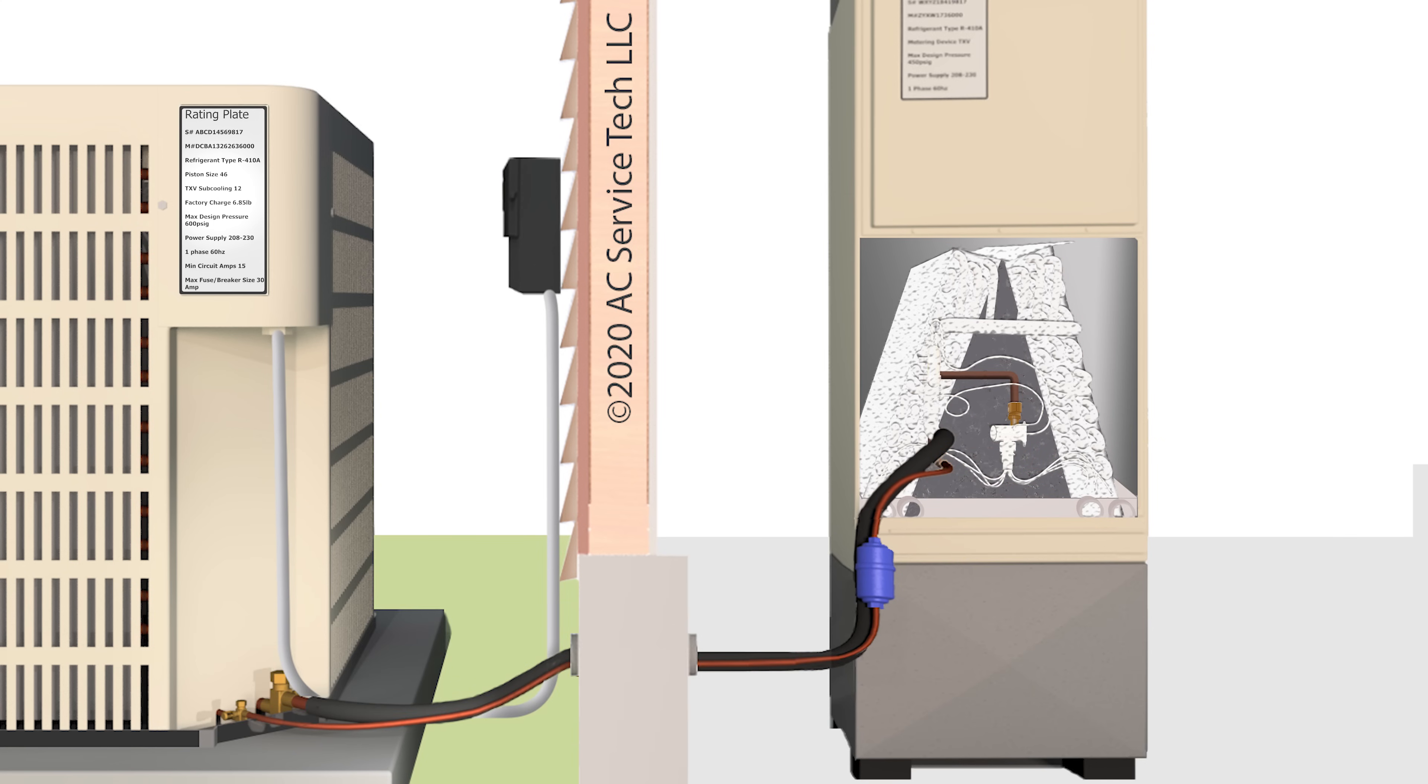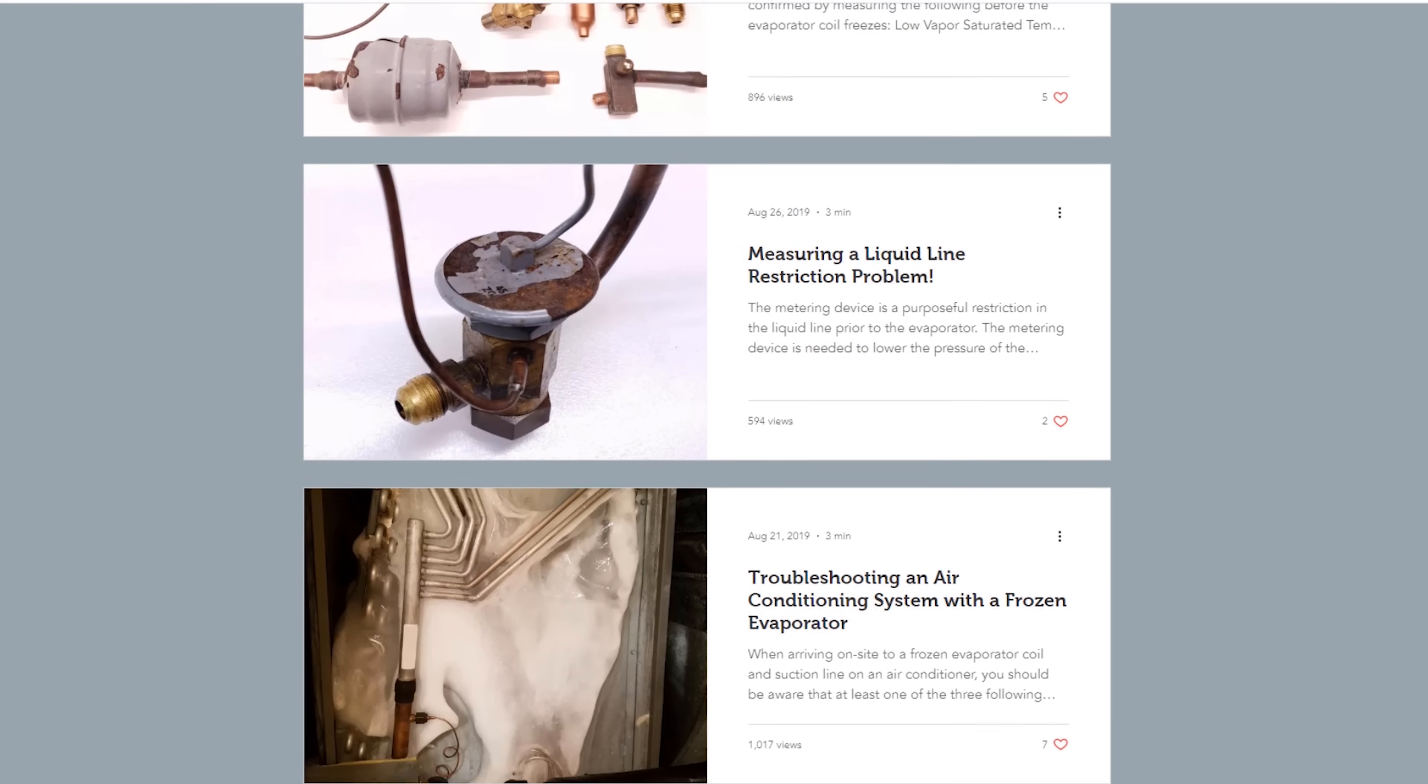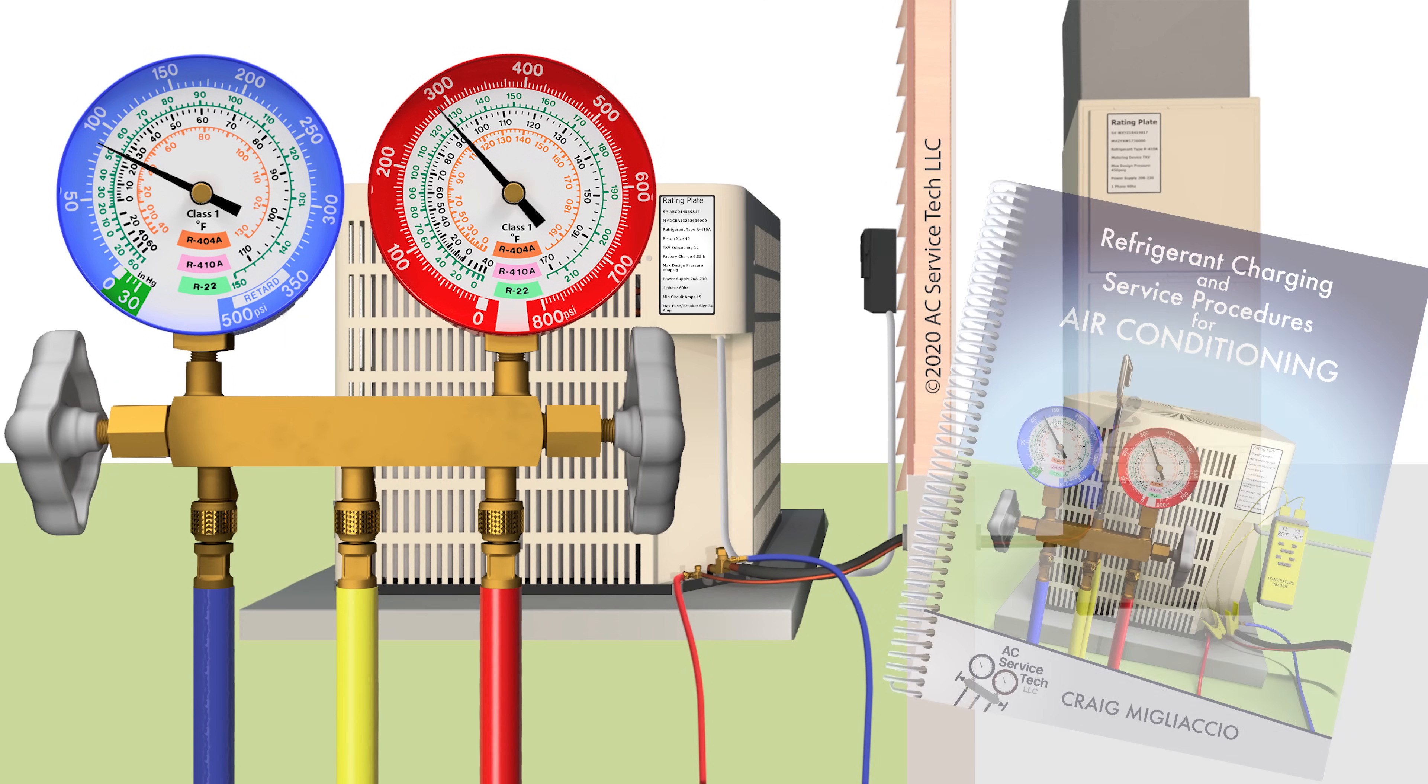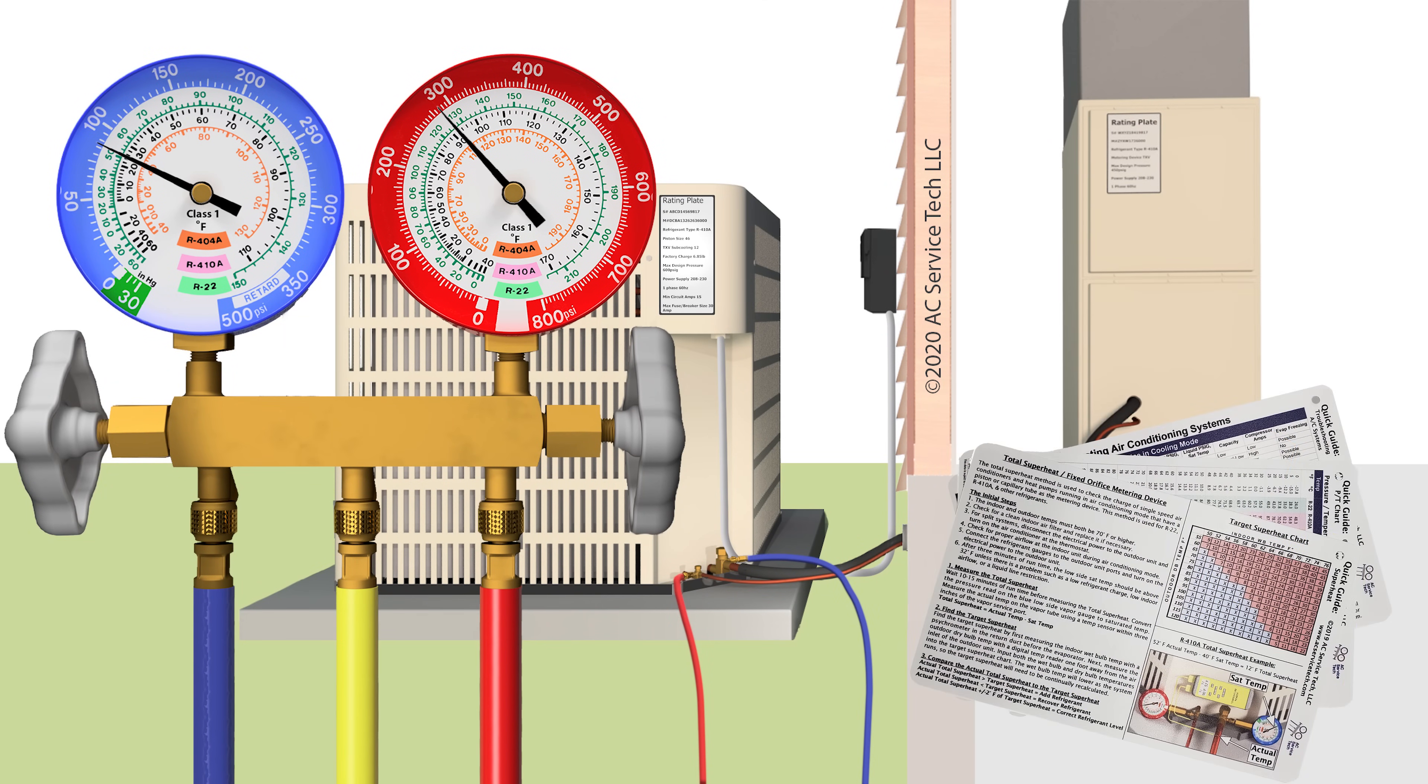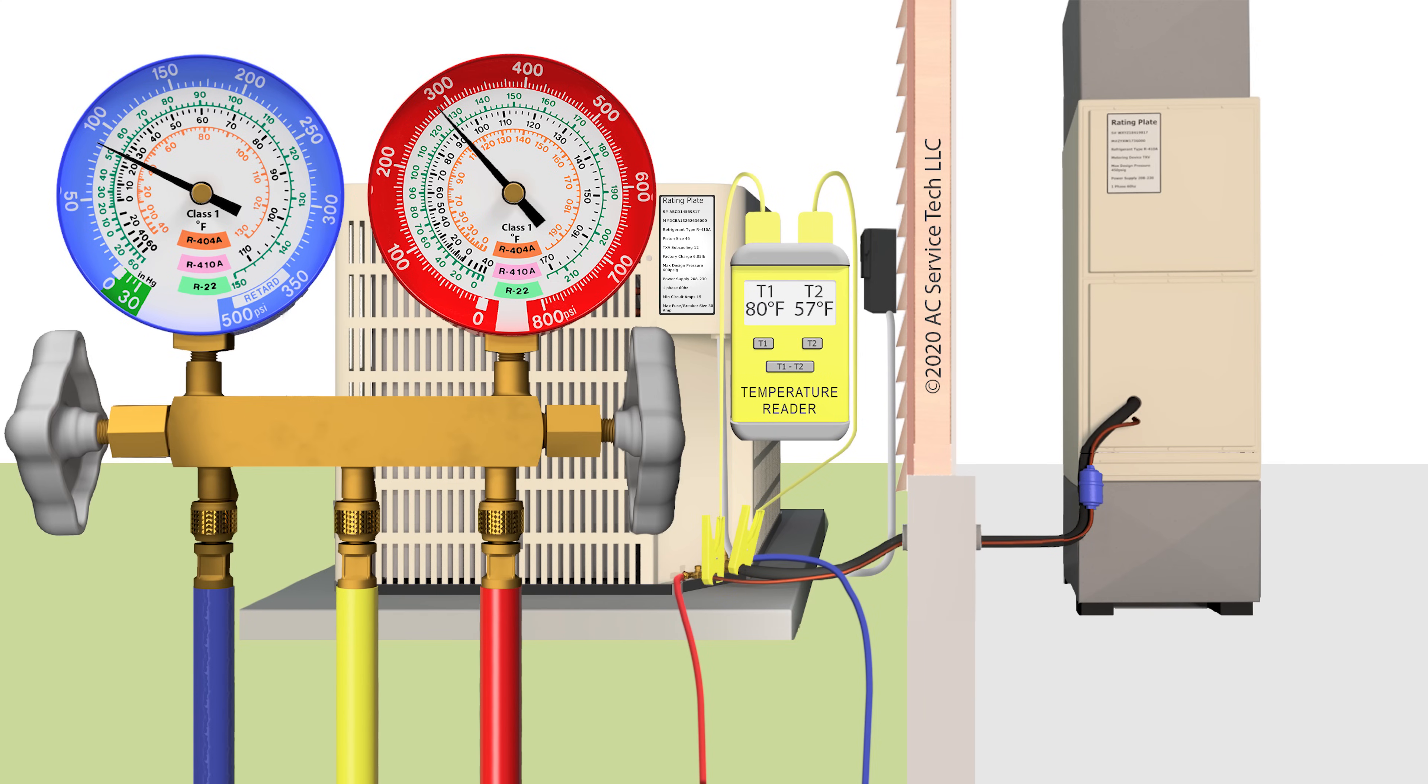So you don't necessarily have to defrost that evaporator coil before diagnosing the system to determine if it is low on refrigerant. Now, if you got a subcooling of 8 degrees or 14 degrees or something like that, it could be a low airflow problem or a liquid line restriction problem, and we have some articles over at our website that you can read to determine what the problem could be. You can also check out our troubleshooting guides in our book and also in our quick reference cards, which are available over Amazon and our website at acservicetech.com. But that's how you do it. You can check the saturated temperatures and the superheat and subcooling to determine what's going on in that system.